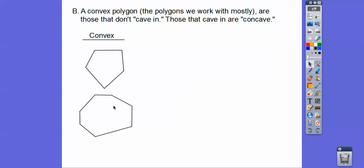Here are concave polygons. This is a concave quadrilateral. This is a concave 1, 2, 3, 4, 5, 6 hexagon. You see how they cave in on the inside? These are concave. We will work with these, but most of the time we'll work with these guys. So this lesson, we're talking about convex polygons.